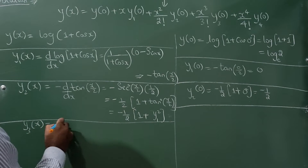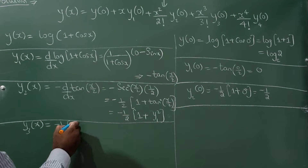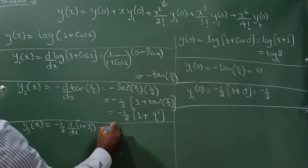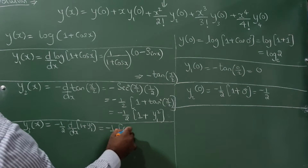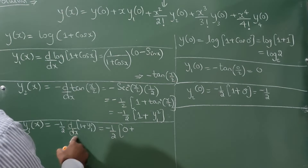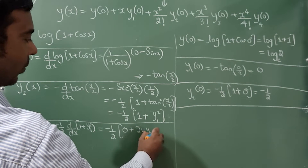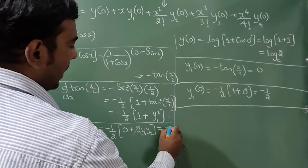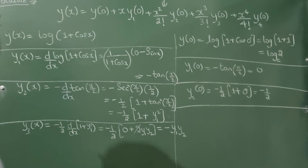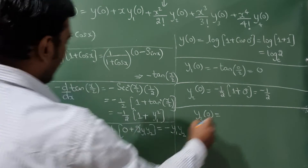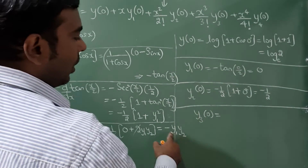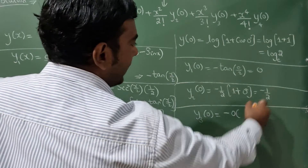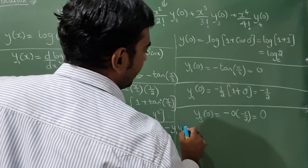Now find y₃(x) by differentiating y₂ = −(1/2)·(1 + y₁²). The derivative of the constant 1 is 0, and d/dx(y₁²) = 2·y₁·y₂. After cancellation: y₃ = −y₁·y₂. Substituting x = 0: y₃(0) = −y₁(0)·y₂(0) = −0·(−1/2) = 0.